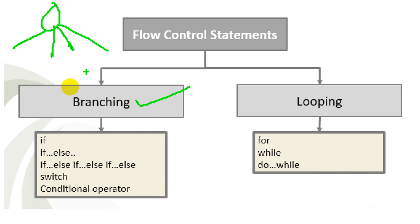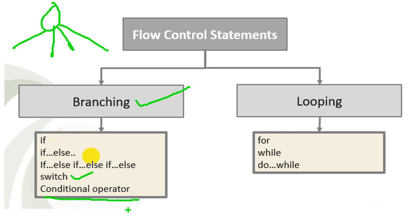Branching is about taking a decision based on a condition. The most widely used is the if statement, then if-else, and if-else-if-else for nested or sequential conditions. Switch case is also used for branching when you have multiple options and want to execute only one statement from, say, 10 options based on user selection. We'll also see the conditional operator, which lets you write if-else in a single line.